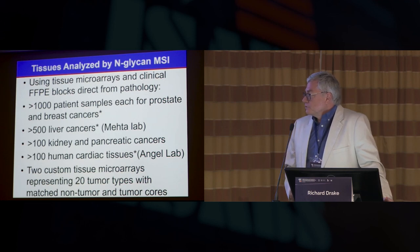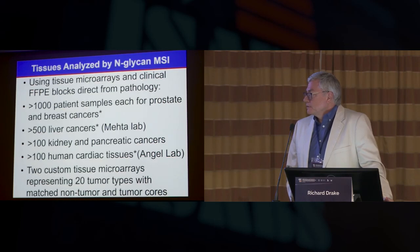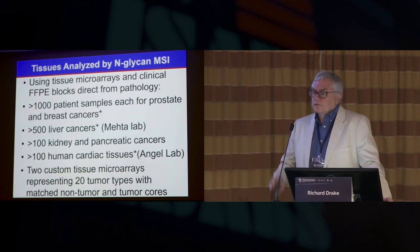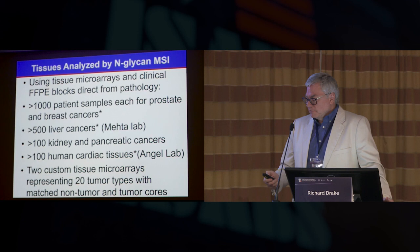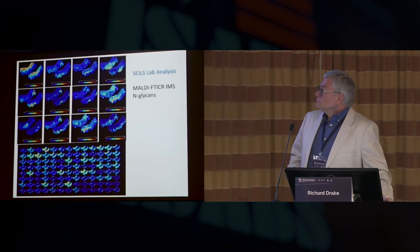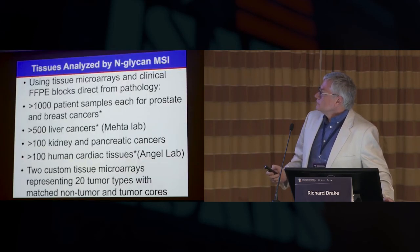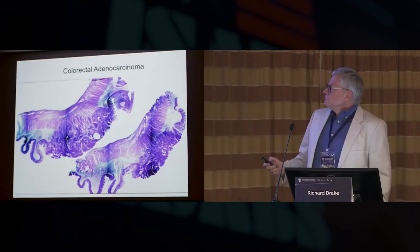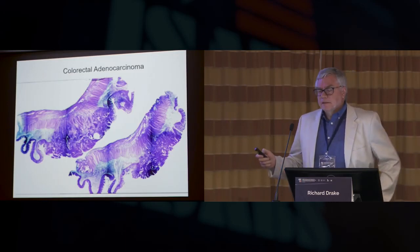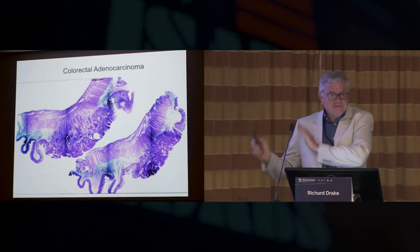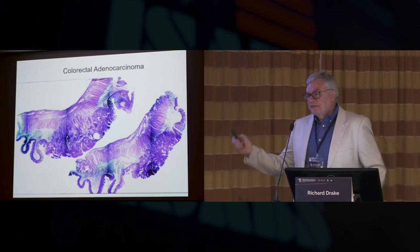I want to show just one example where we made a custom tissue microarray with 20 tumor types. And these weren't for biomarkers, it was just a core where we had a tumor, and then the pathologist selected a region that wasn't tumor, just so we could compare profiling that way. Just wait for that. It's going to be amazing.